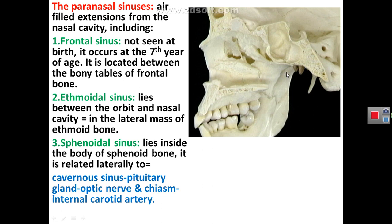Now we will describe the paranasal air sinuses. The frontal air sinus lies within the plates of the frontal bone. It is not usually present in children and develops at the age of 7 years. The sphenoidal air sinus lies in the body of the sphenoid bone, and is related laterally to the pituitary gland in the sella turcica, to the optic chiasma in the chiasmatic sulcus, and to the internal carotid artery when it runs medial to the anterior clinoid process.